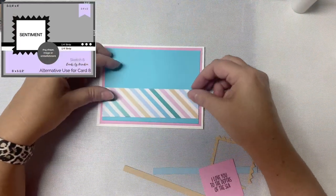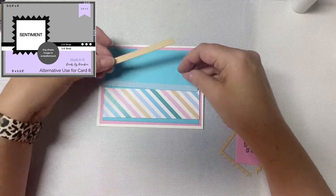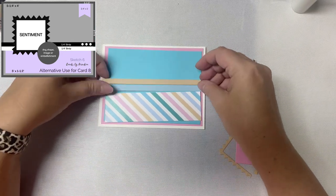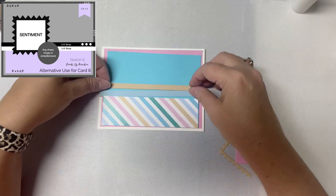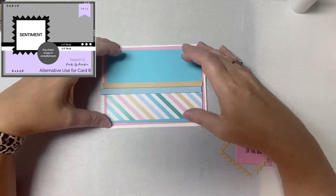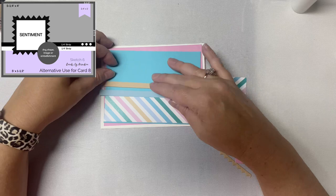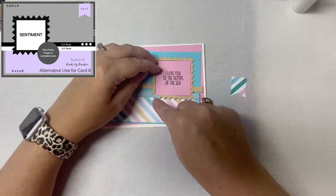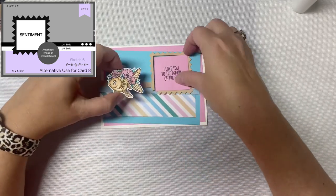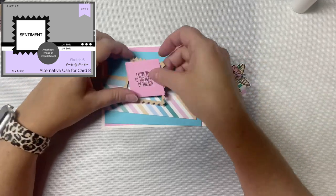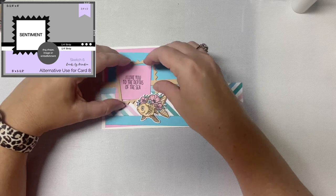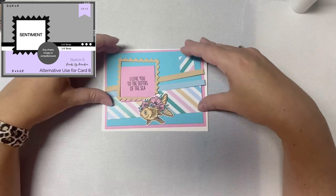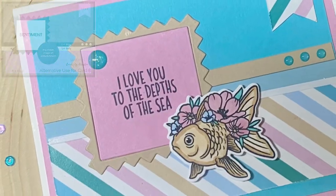Then the final card is the alternate for card 8. And it uses sketch 6 from the printable. And it's very similar to sketch 7. The only difference is the bottom strip is 1 piece instead of 2. And the layer shows at the top instead of having another patterned paper piece. And also there's a banner in the top right corner. So if you're only making one set and you decide to use the alternative sketch instead of sketch 5, you will have the extra banner pieces. And so here is the finished card.